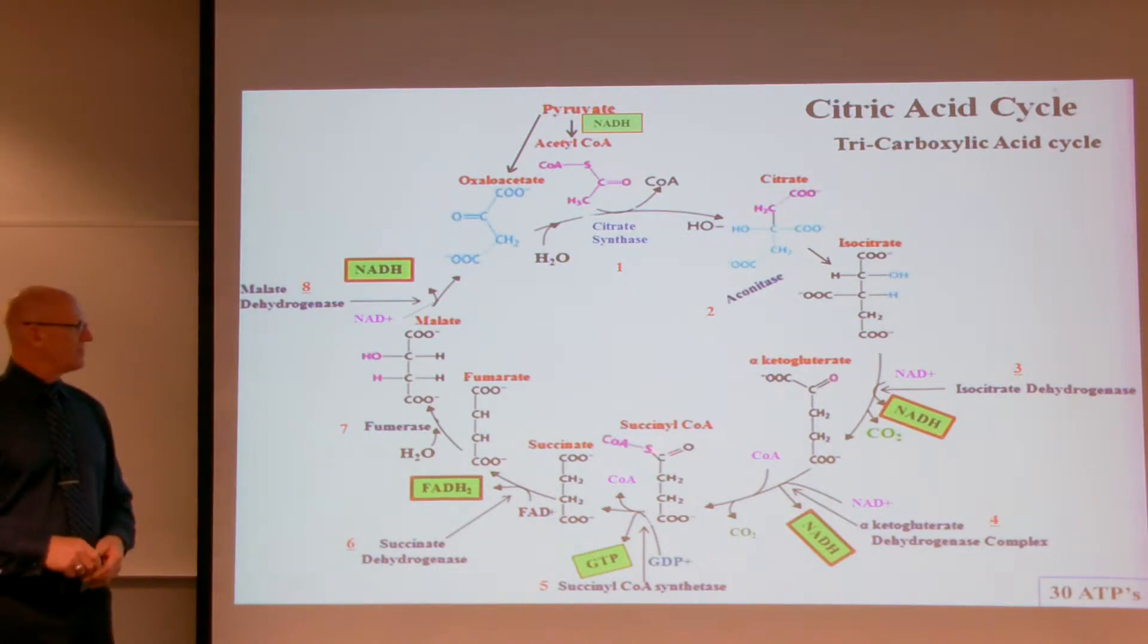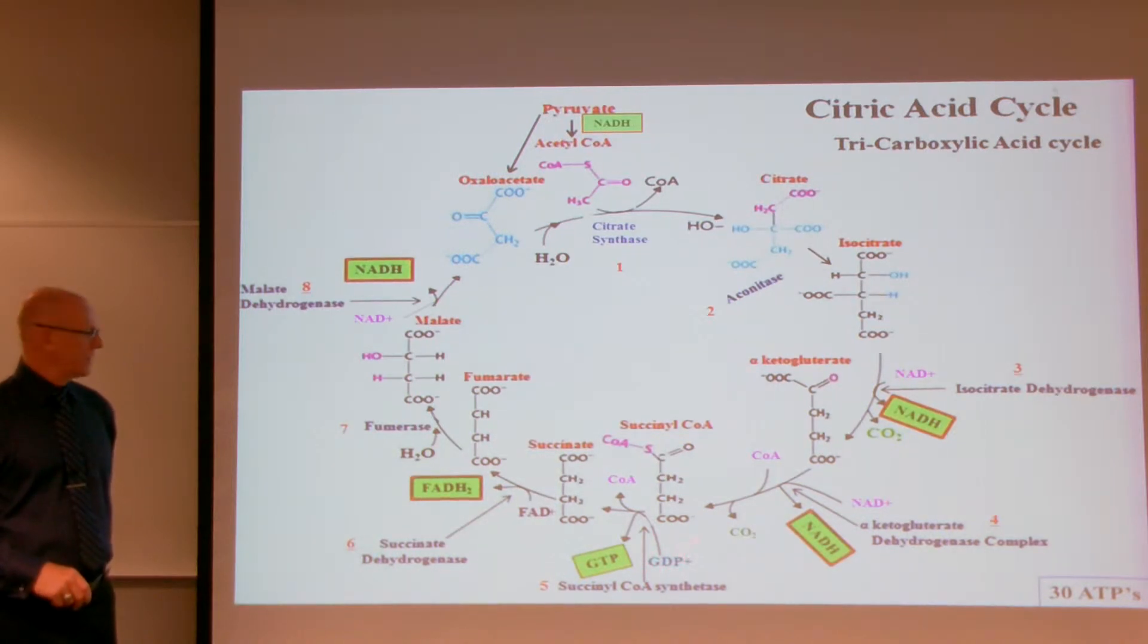This is a four-carbon molecule, succinyl-CoA. Now the fifth step, succinyl-CoA synthetase, is going to remove the coenzyme A, and that will liberate some free energy, where guanosine diphosphate will pick up the phosphate and add guanosine triphosphate through that energy.